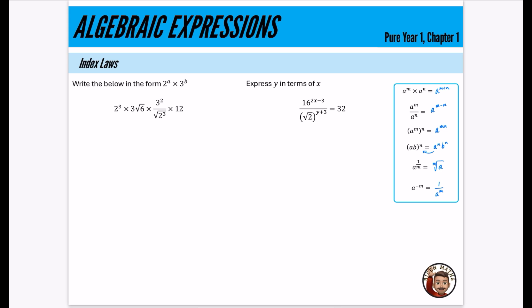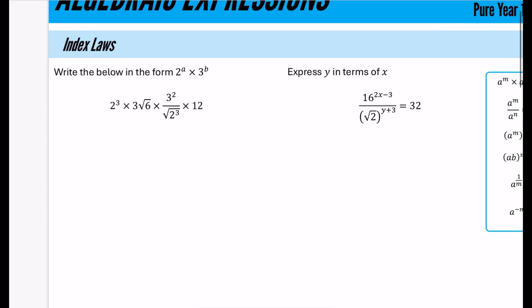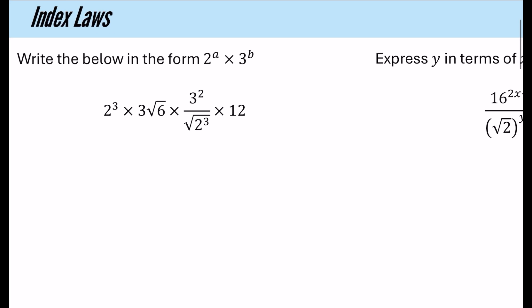The stuff in the textbook exercises is pretty straightforward, so I've got two more challenging questions to build you up ready for exam questions on this topic. The first one is to take this expression and write it in the form two to the power of a times three to the power of b, finding what a and b are. I'd recommend pausing and having a go, or if you're watching for revision, you can watch me do it.